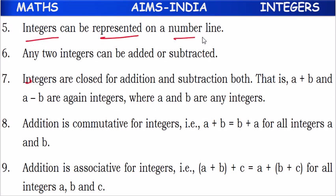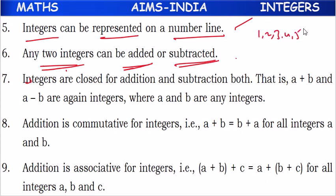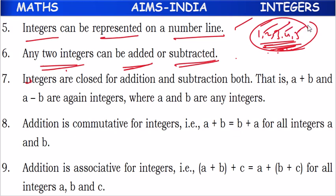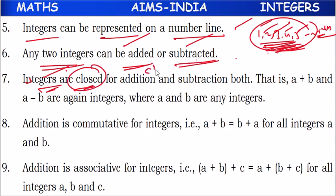Integers can be represented on a number line. Any two integers can be added or subtracted — integers are closed, meaning they follow the closure property under addition and subtraction. Addition is commutative for integers: a plus b and b plus a give the same result, so two integers can be added in any order.